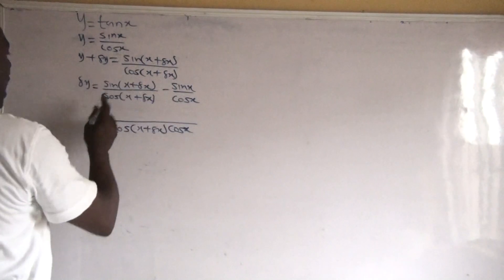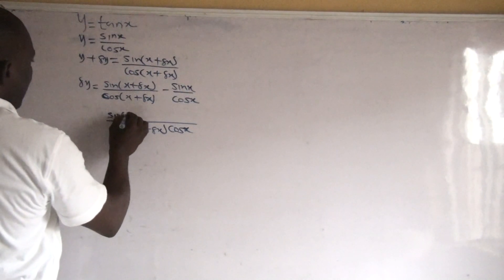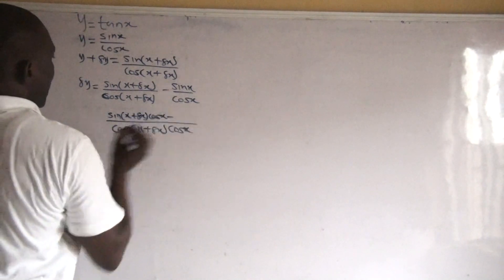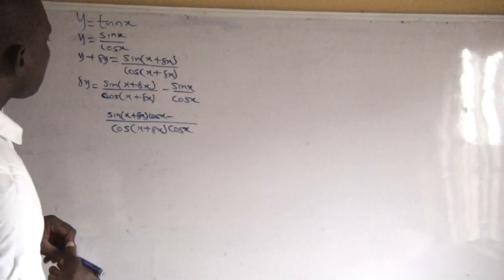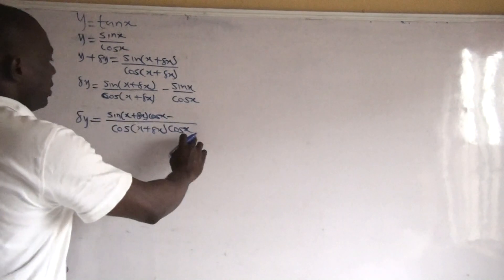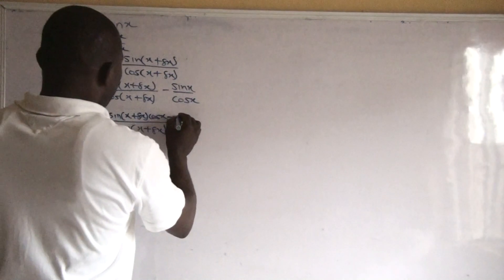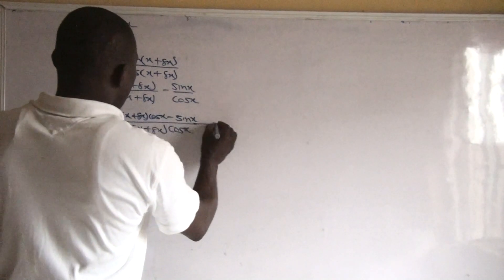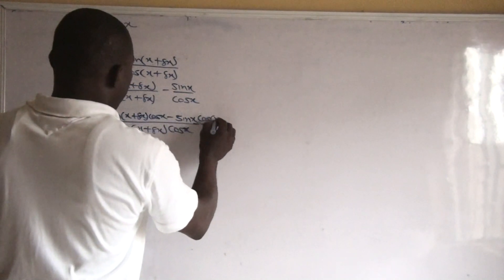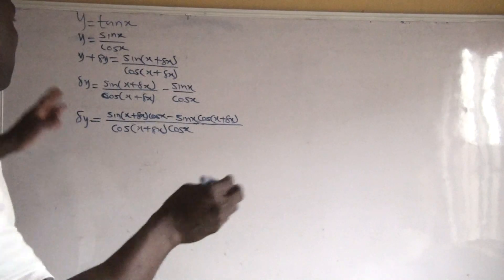We use this LCM result to multiply the numerator. Dividing cos(x + Δx) into the denominator leaves cos x, so we get sin(x + Δx)·cos x minus sin x·cos(x + Δx), all over cos(x + Δx)·cos x.